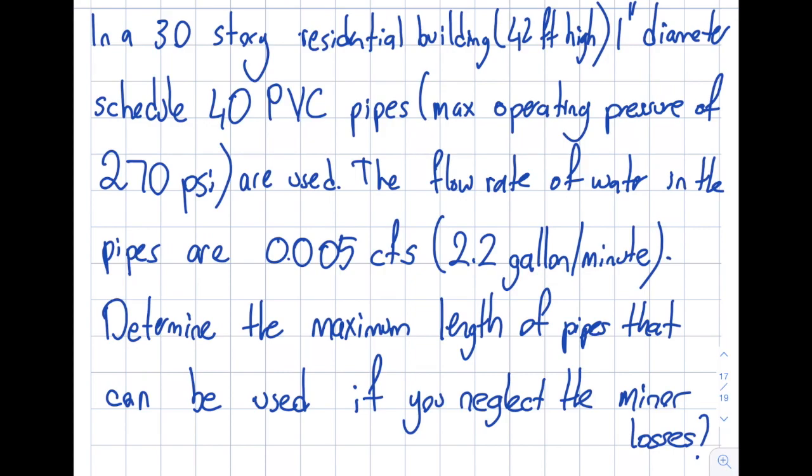So let's say that I'm using one inch diameter and schedule 40. Schedule 40 is a type of PVC pipe. There's also schedule 80 which is higher quality, and the maximum operating pressure of schedule 40 one inch diameter PVC pipe is 270 psi. That's fairly high as well, just want you to realize.